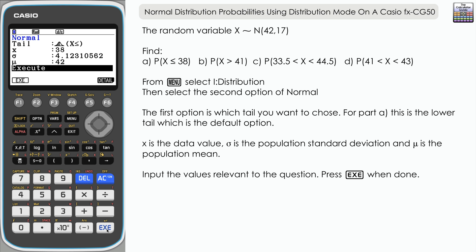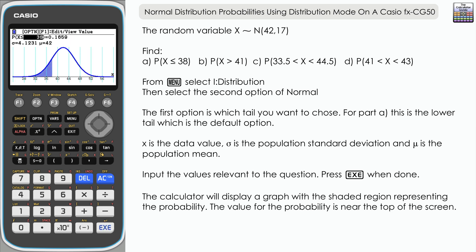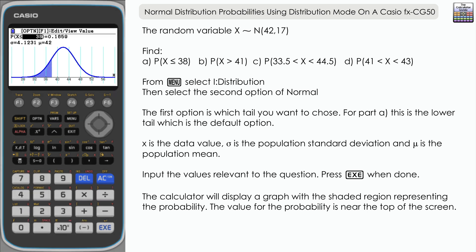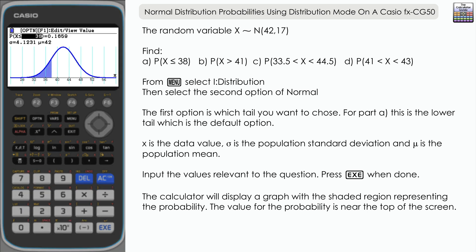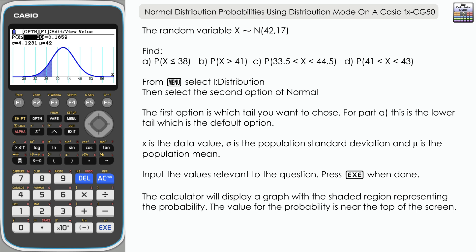Press execute and execute again. With distribution mode, we've got a graph—a visual representation of the probability—showing the shaded area of the graph and the corresponding probability.